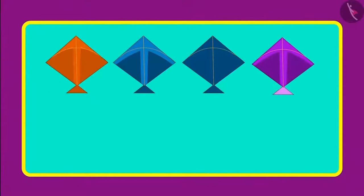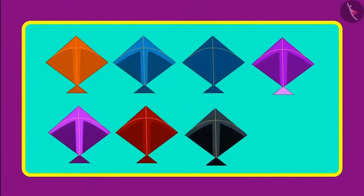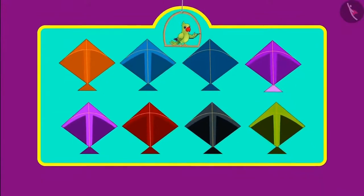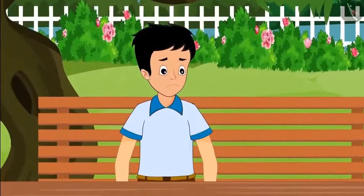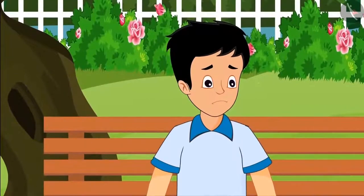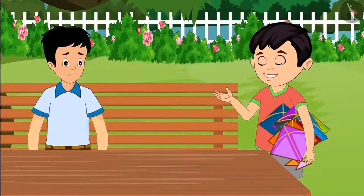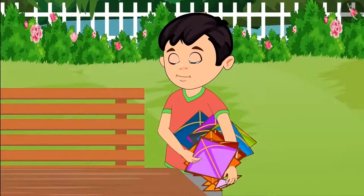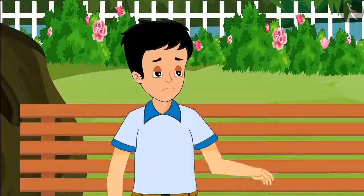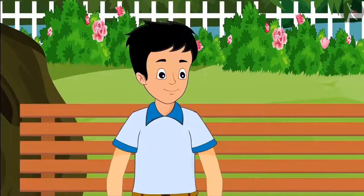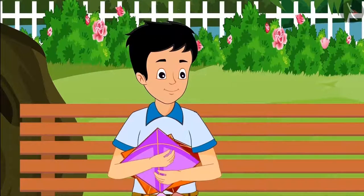One, two, three, four, five, six, seven, eight. Chotu bought eight kites, but by now the shop was left with no kites. Sonu got sad and sat under a tree nearby. Chotu said, hey Sonu, why are you sad? Come on, you take three of my kites. Thank you Chotu, let's go home and fly kites.